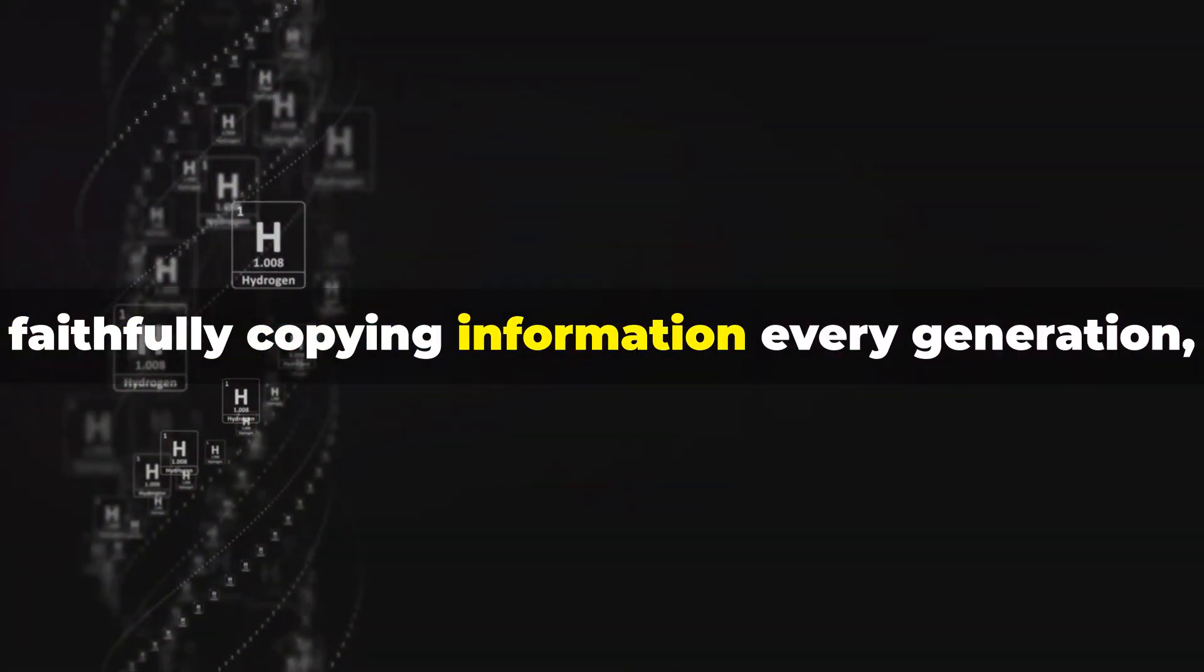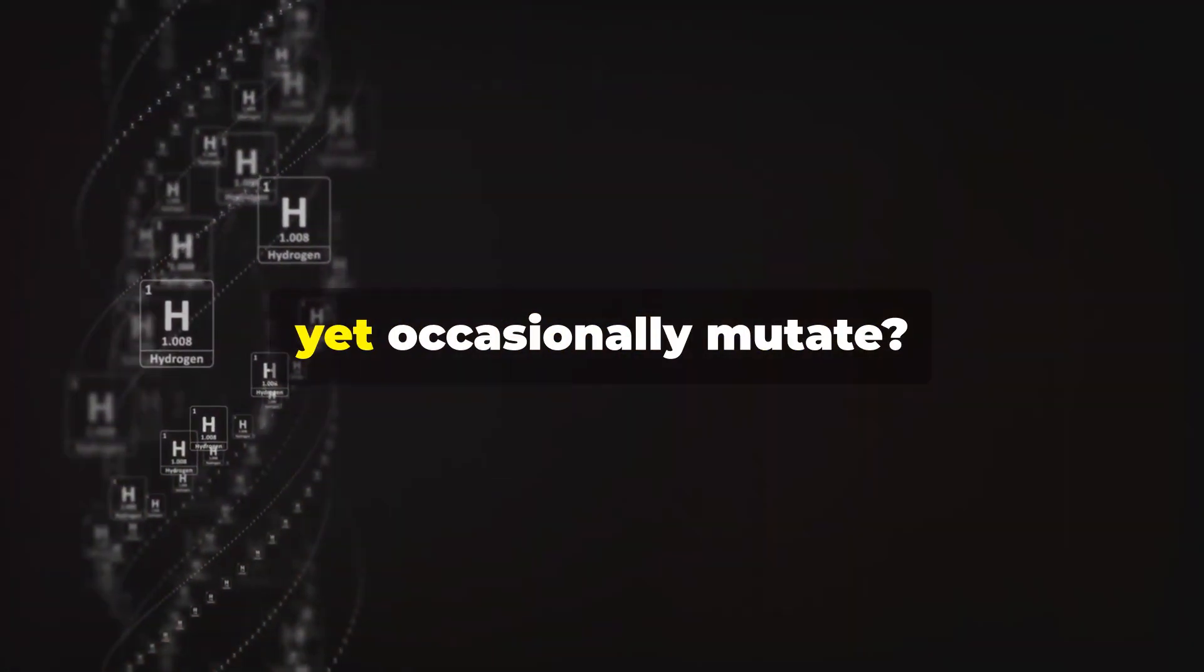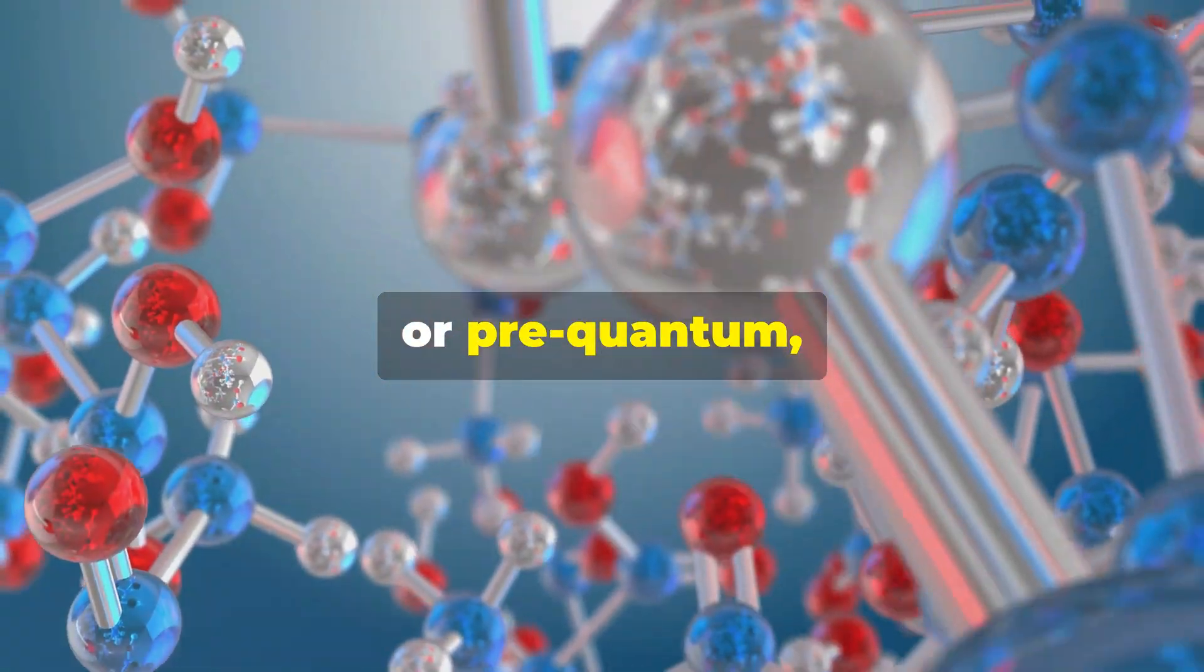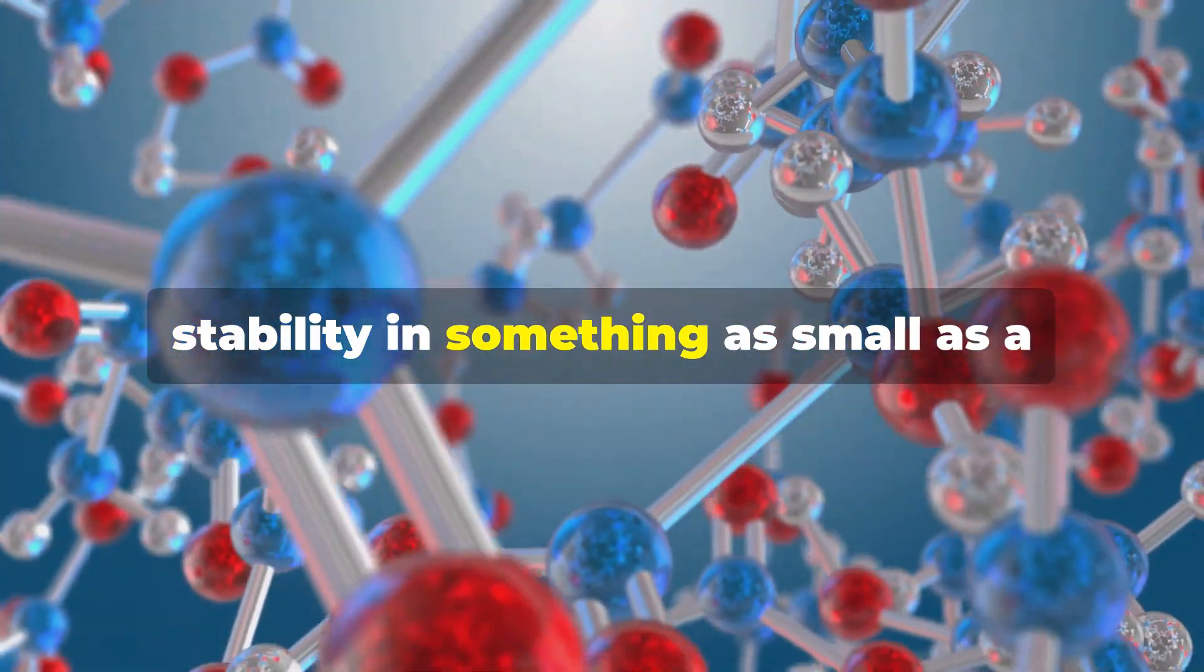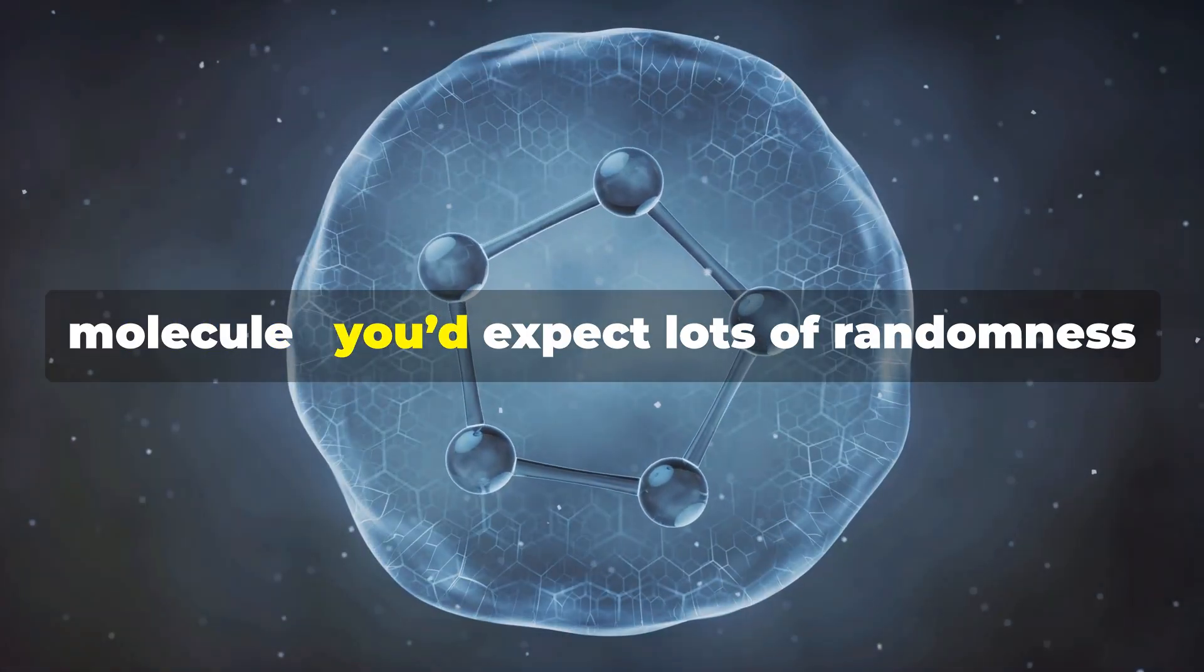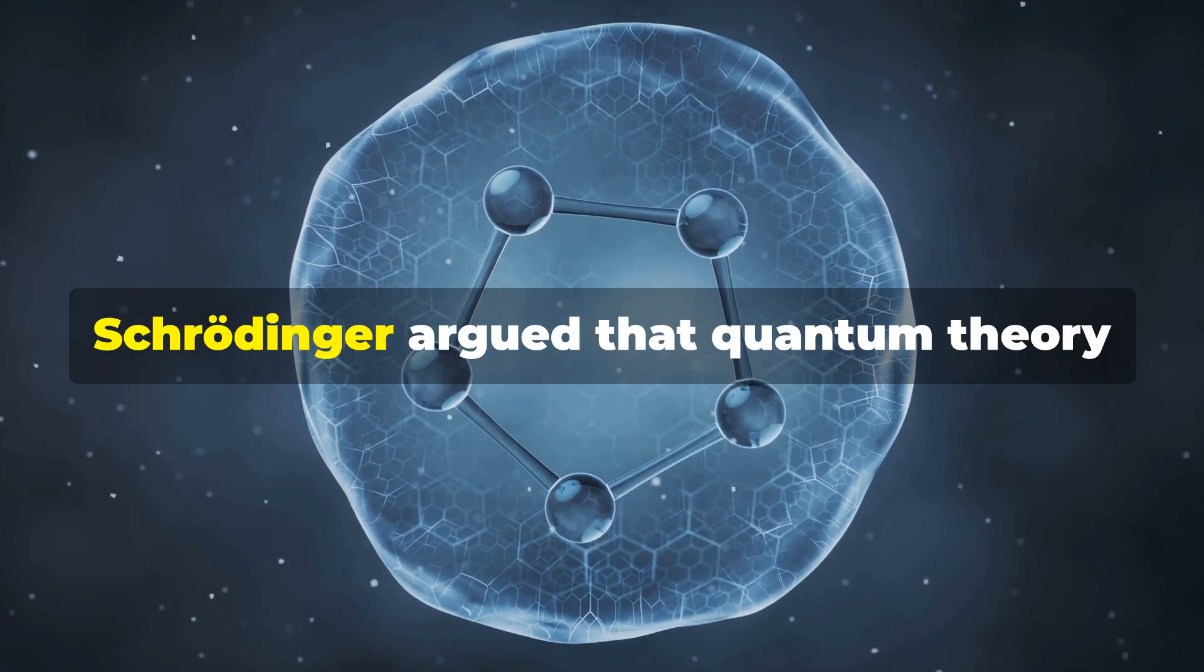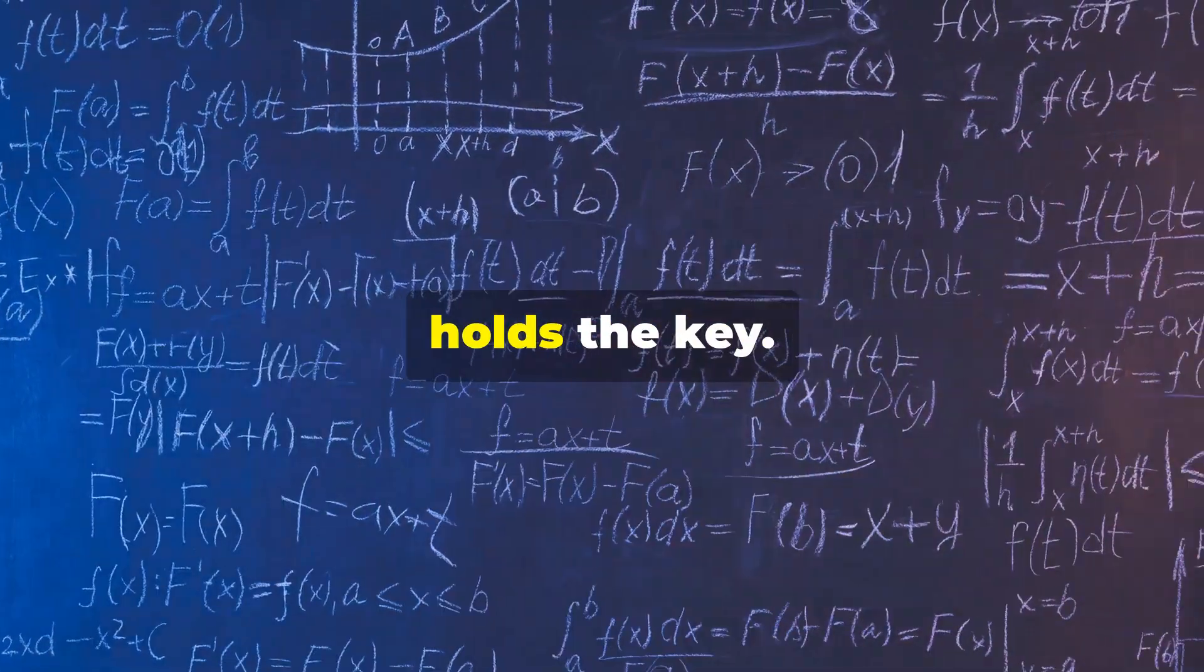How can genes be so stable, faithfully copying information every generation, yet occasionally mutate? Classical or pre-quantum physics couldn't easily explain such stability in something as small as a molecule. You'd expect lots of randomness and decay at atomic scales.